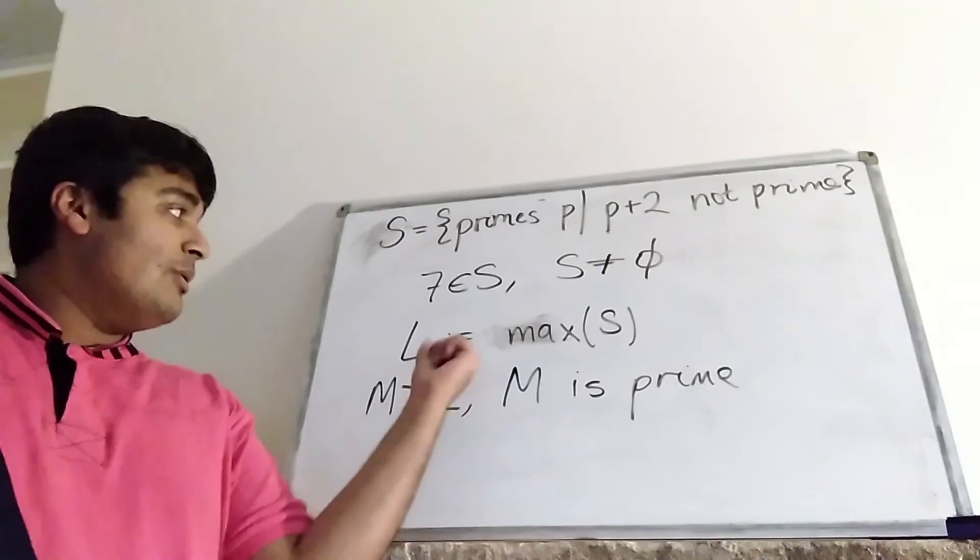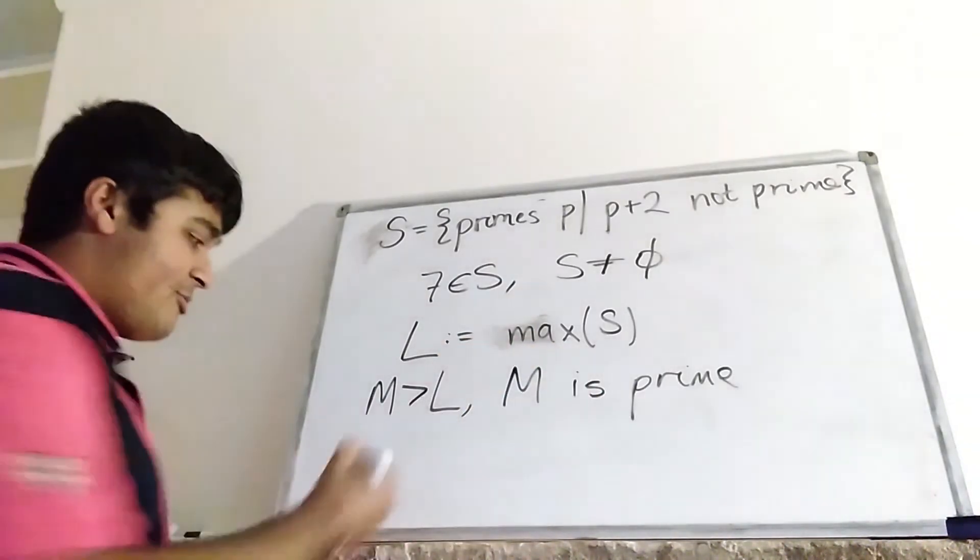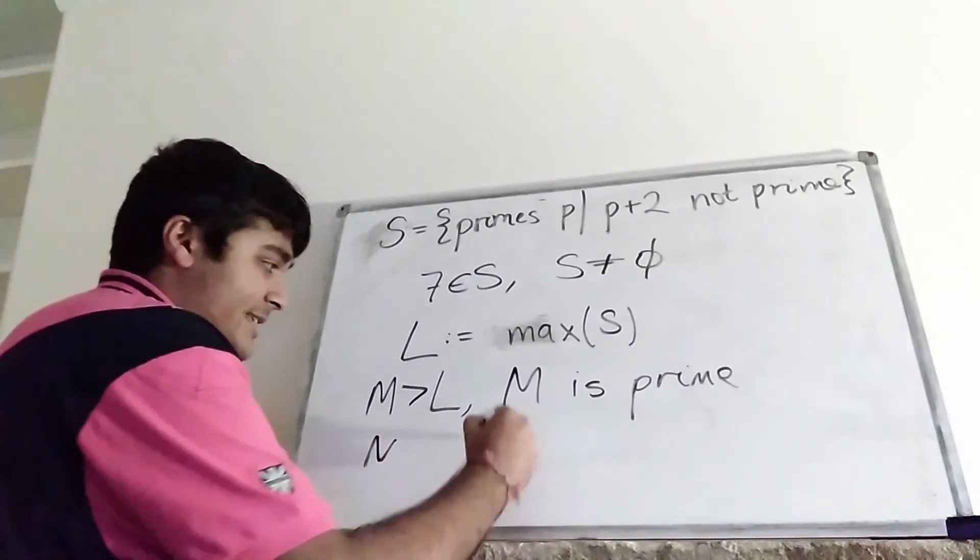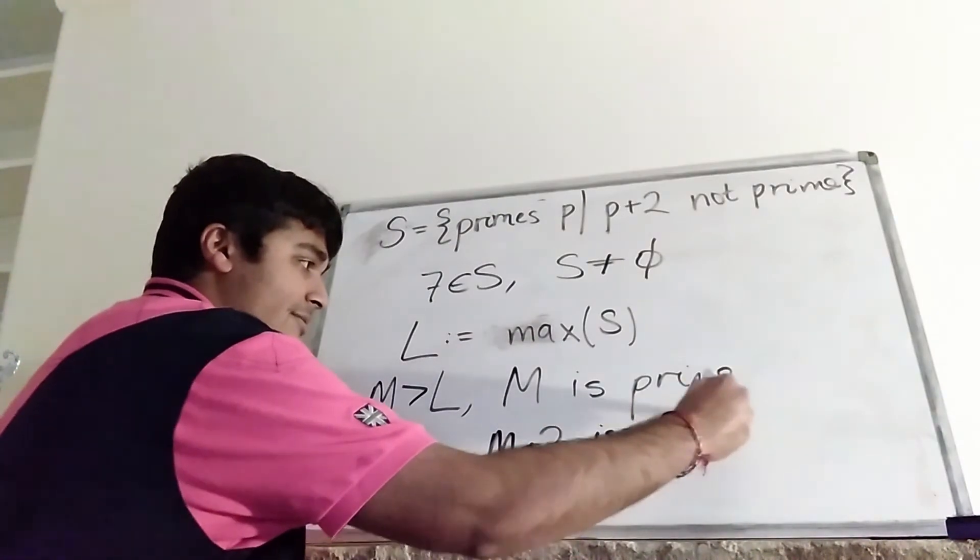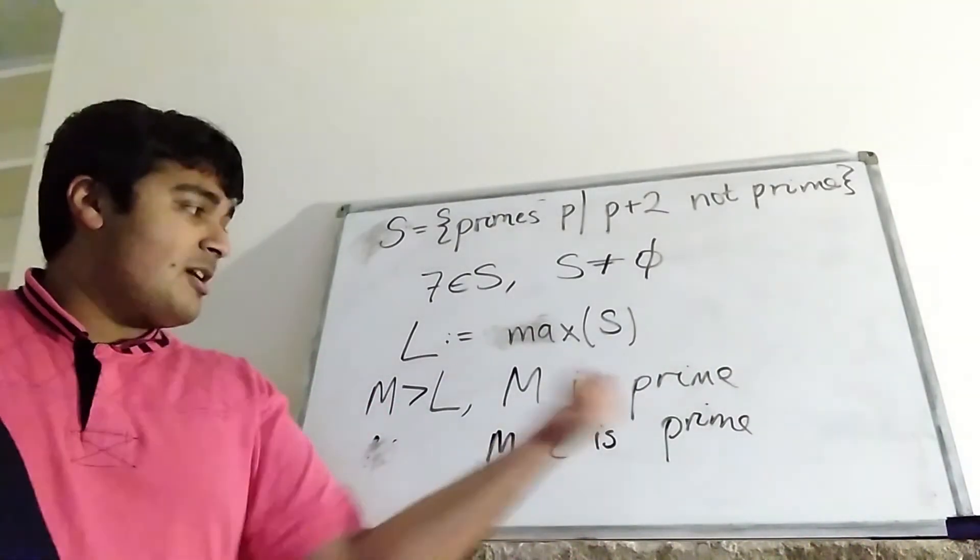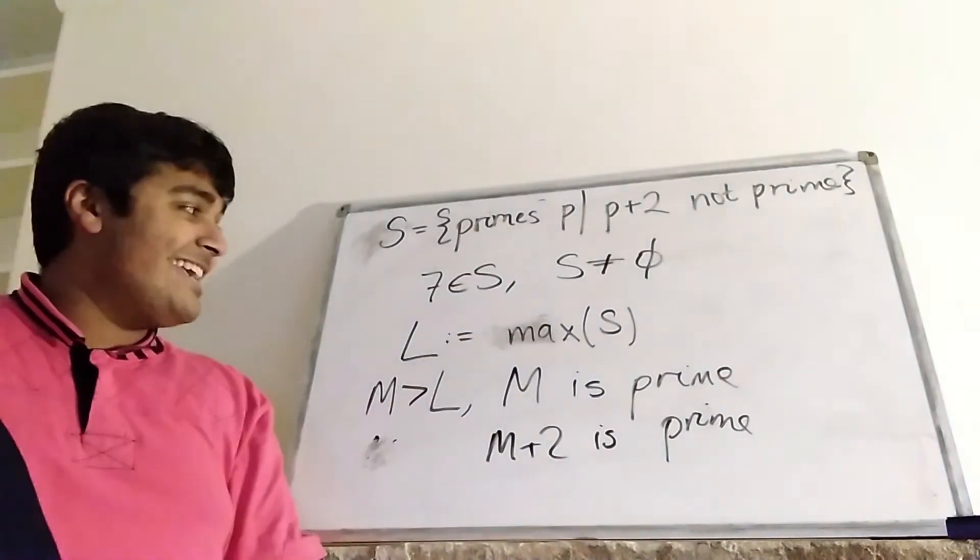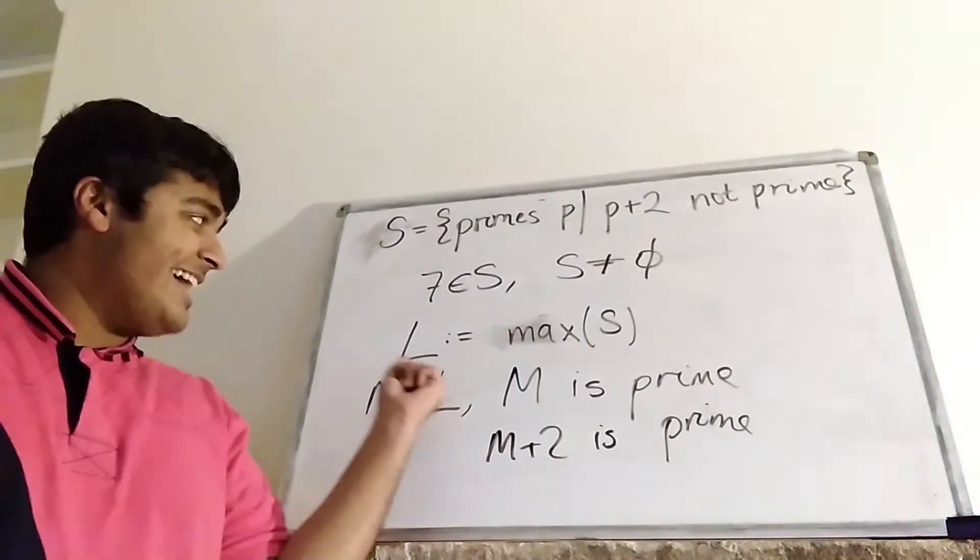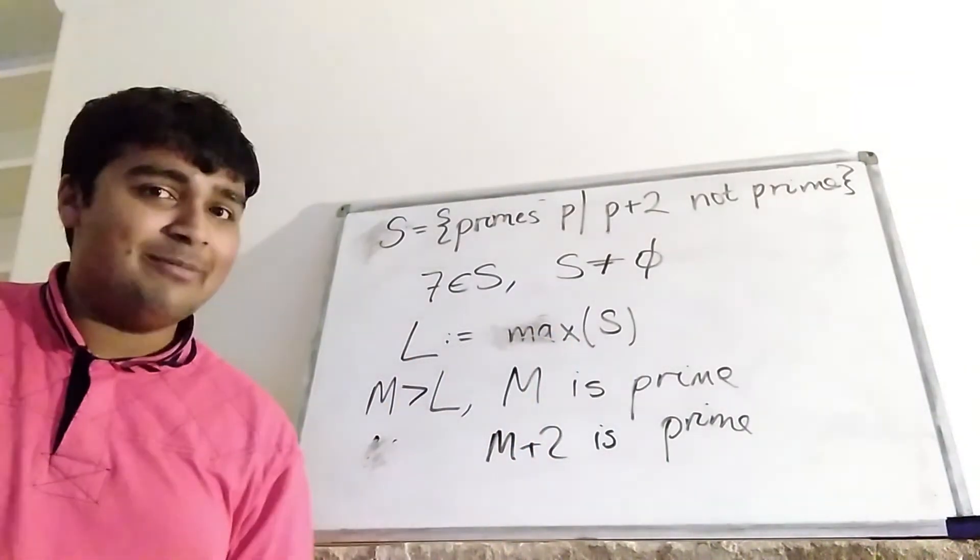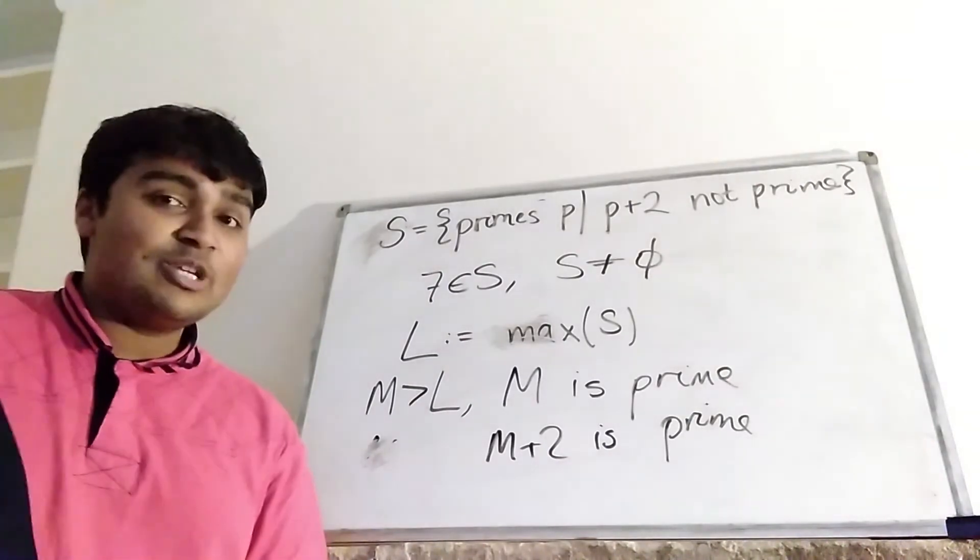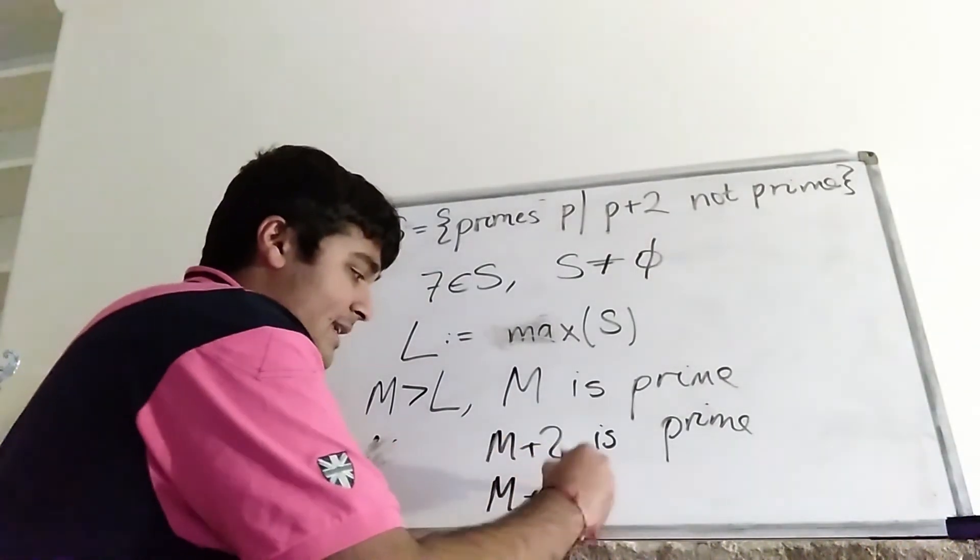Now, because M is bigger than L, and L is the largest element in this set, I claim that M plus 2 must be prime. Well, let me write it here, M plus 2 is prime. Okay, and the reason for this is, because M is prime, if M plus 2 wasn't prime, then that would mean that M was in this set here. But then M is bigger than L, sort of by construction, but then that would contradict that L is the maximum element in S. So it must be that M plus 2 is prime. And similarly, we can conclude that M plus 4 is also prime.